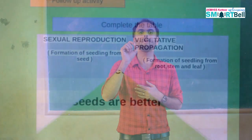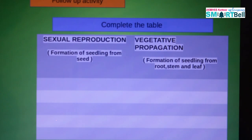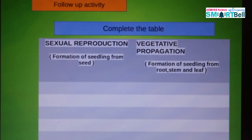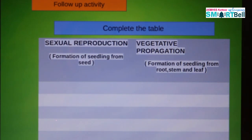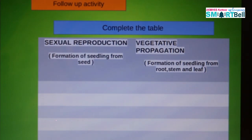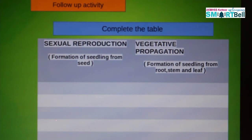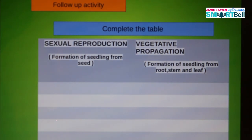You have a follow-up activity. Complete the table. Here you can see two columns — one has the heading sexual reproduction and another one has vegetative propagation. You have to find out five examples in the column of sexual reproduction as well as in the column of vegetative propagation. It is very simple work. I hope you will do it.